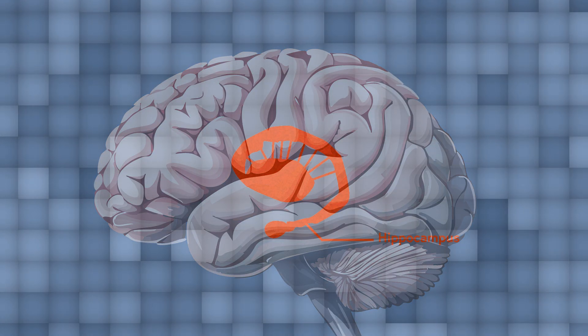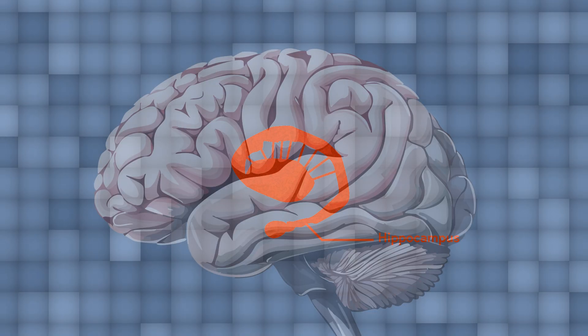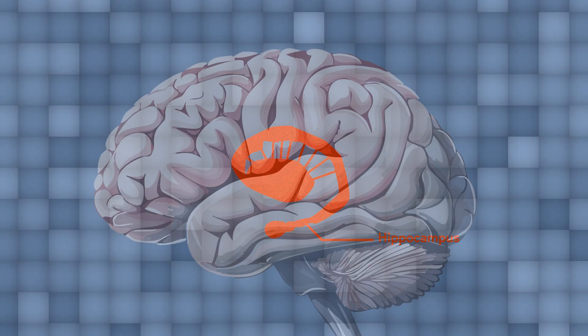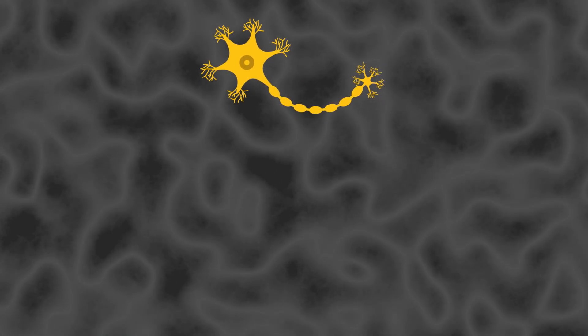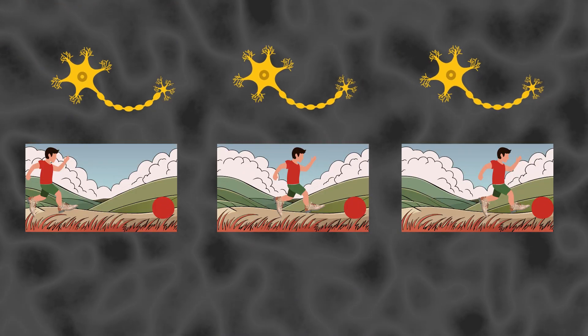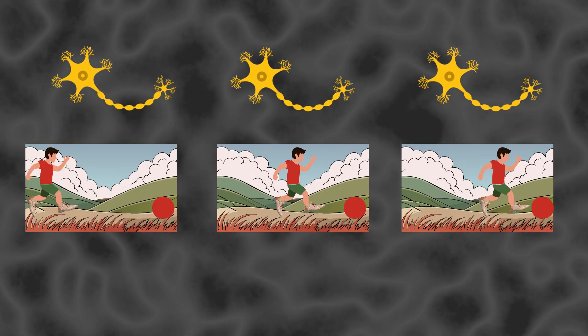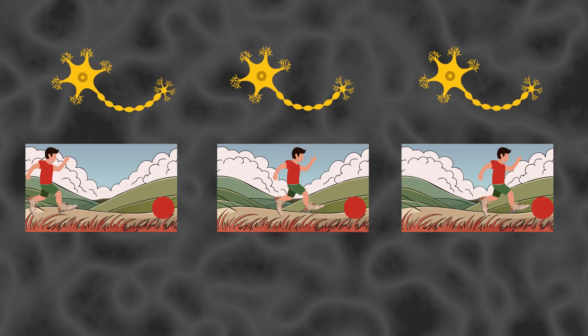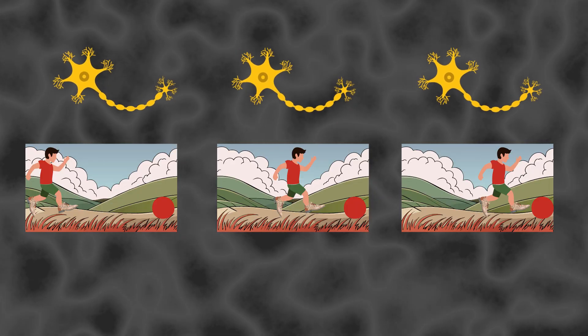These cells are located in the hippocampus, which is an area of the brain crucial in forming memories. Time cells act like the brain's internal stopwatch, firing at specific moments during an experience to create a timeline that helps us remember the order of events, thus making sense of our past.